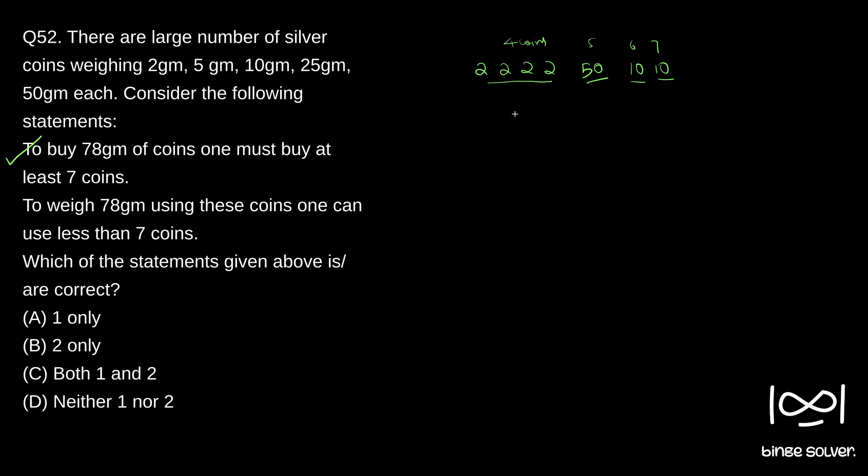Next statement is to weigh 78 gram using these coins one can use less than seven coins. So to weigh 78, you could do say there is a weighing scale like this. So what we can do is...